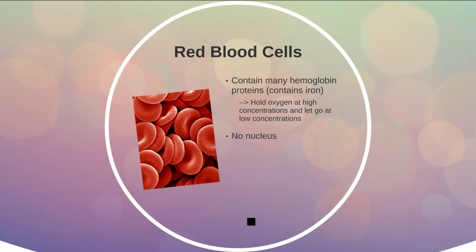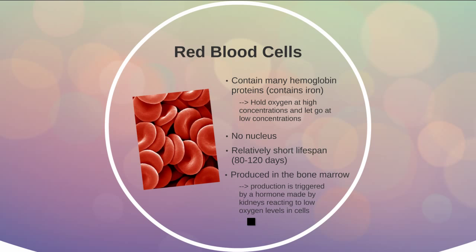Red blood cells are sort of unique in our bodies. They're eukaryotic cells, but they actually don't have a nucleus — they don't have the ability to make their own proteins. They're basically designed entirely to carry oxygen and release it. They have a relatively short lifespan of 80 to 120 days, so you're constantly producing more red blood cells. That's done by specialized stem cells in your bone marrow, triggered by a hormone produced in the kidneys — a negative feedback loop based on oxygen level in the cells. If oxygen levels get low, the kidney produces this hormone, causing bone marrow to create more red blood cells to deliver more oxygen.